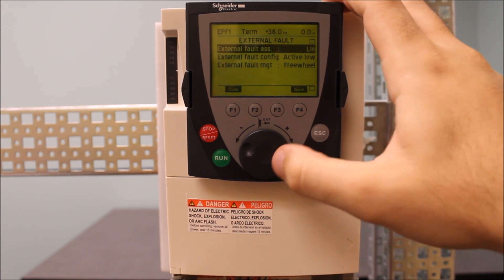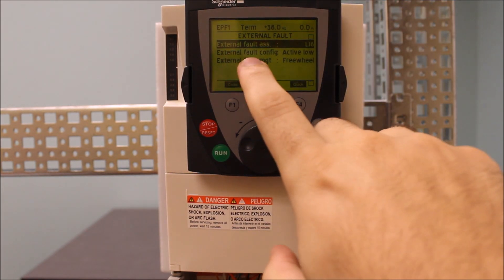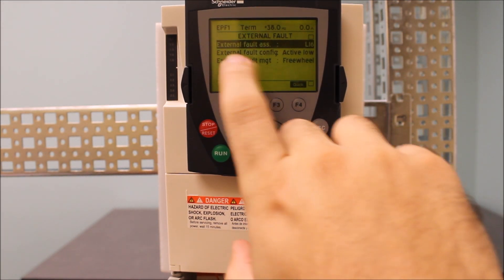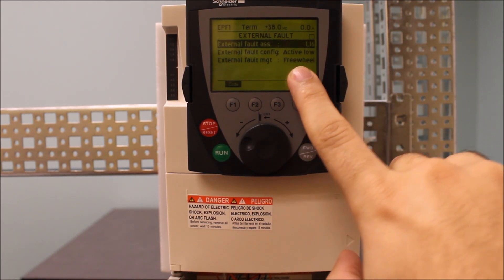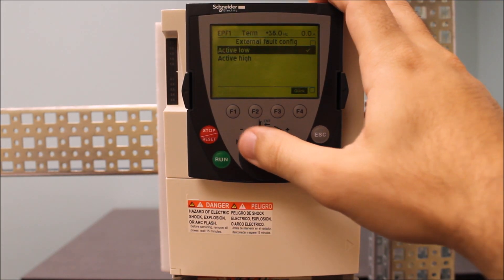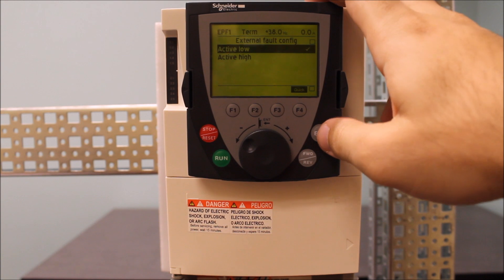And here we go. So right now, we have external fault assignment programmed to LI6 as an example here. And we have external fault configuration as active low. Again, this can be programmed as active low or active high. So make sure that it's programmed for the right configuration.